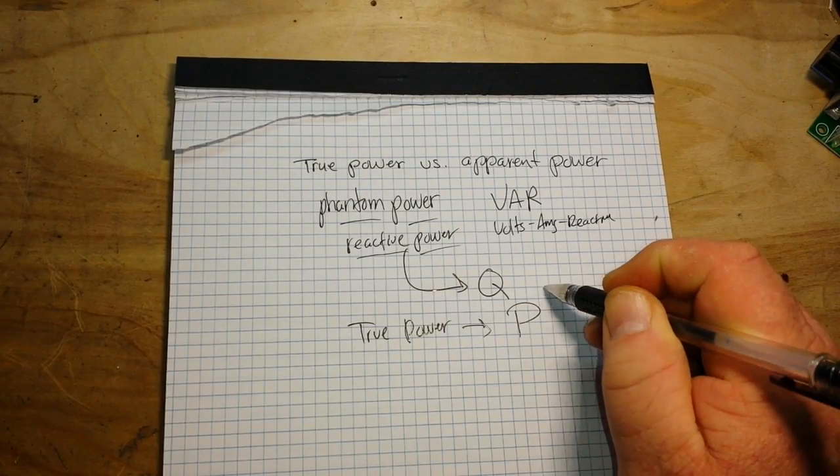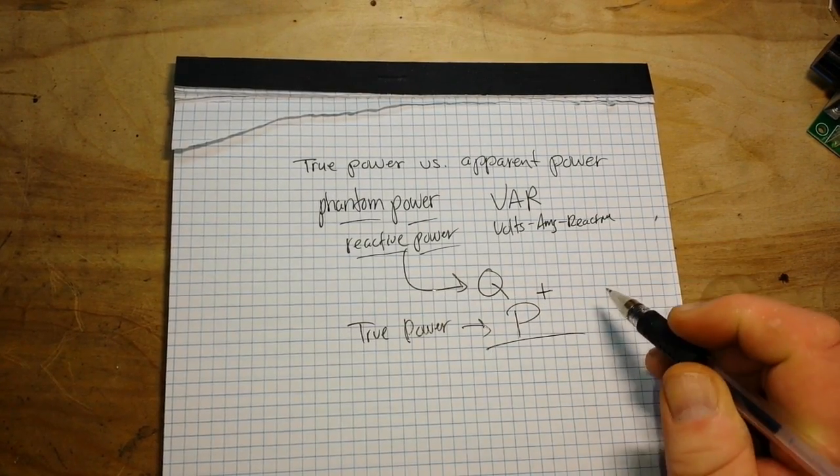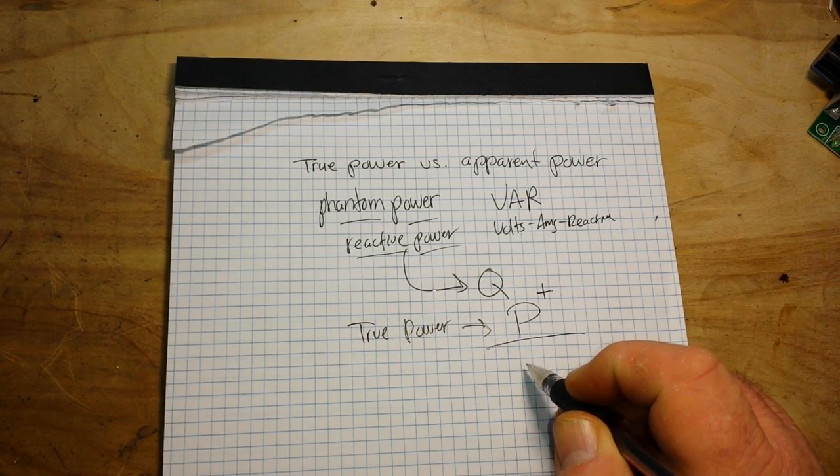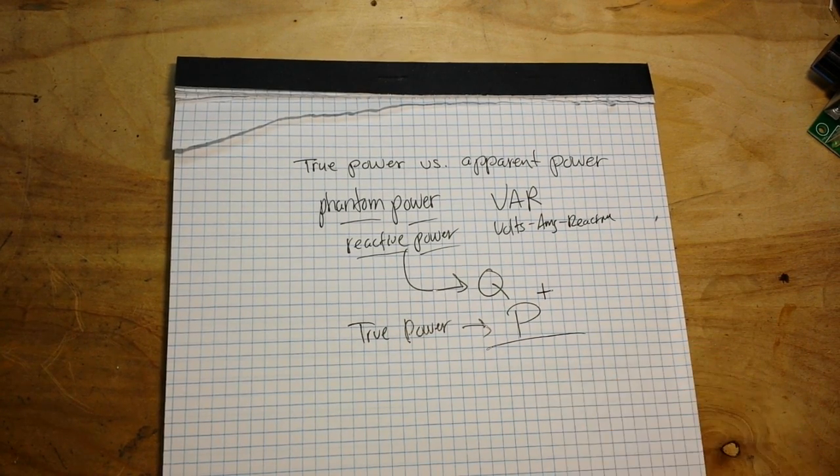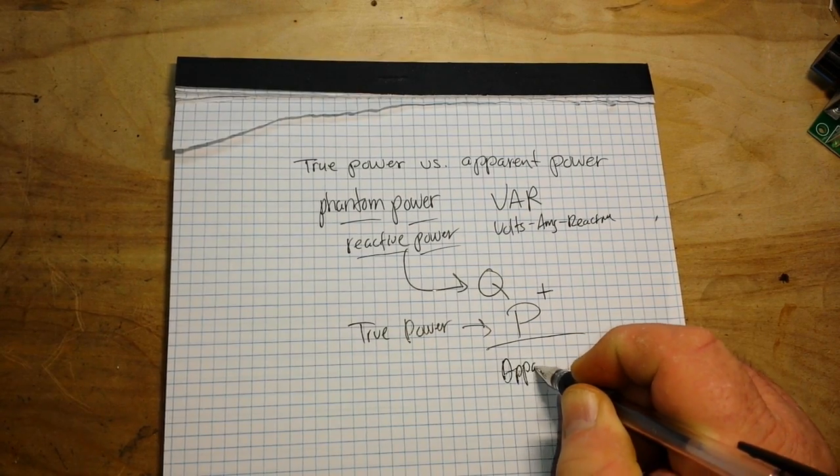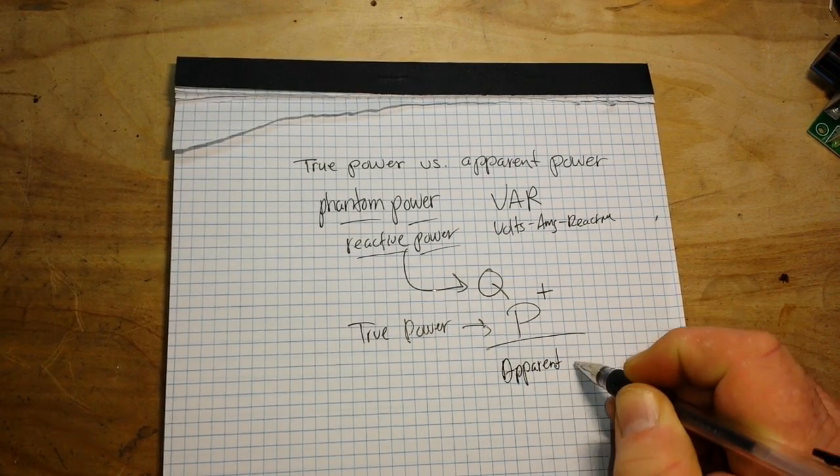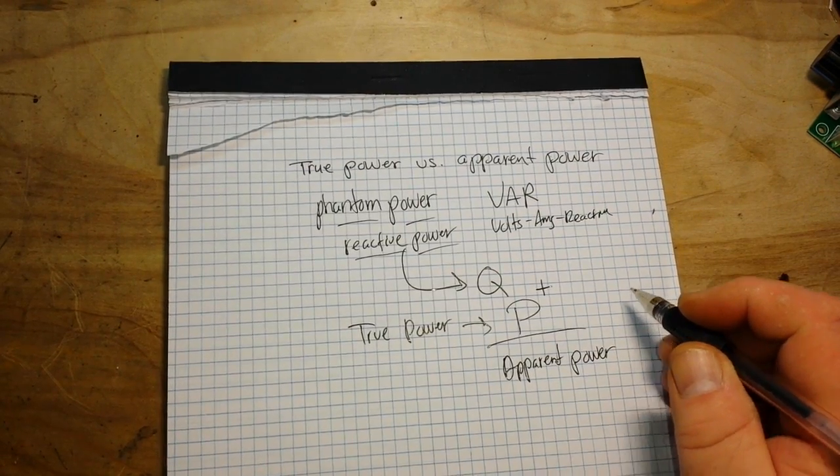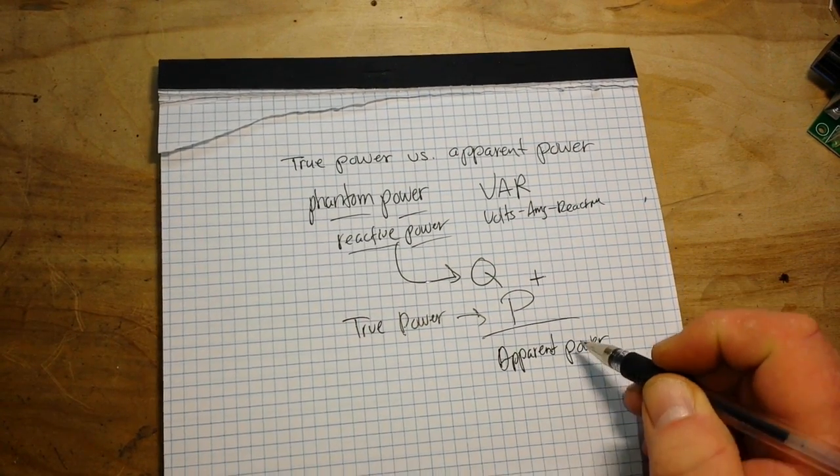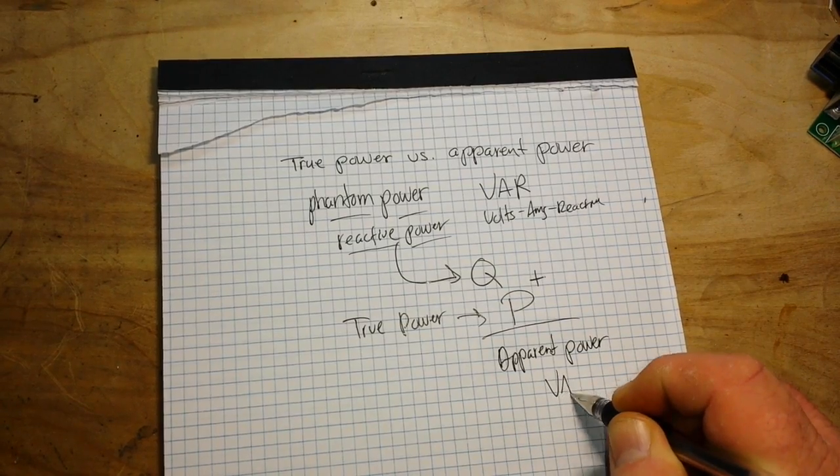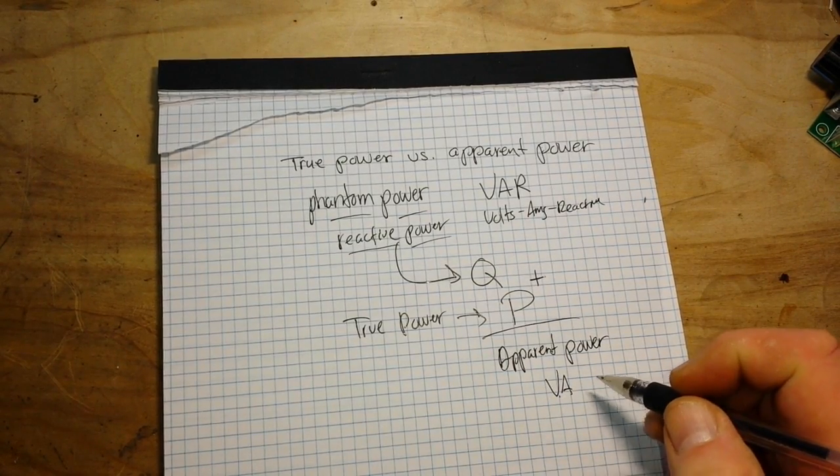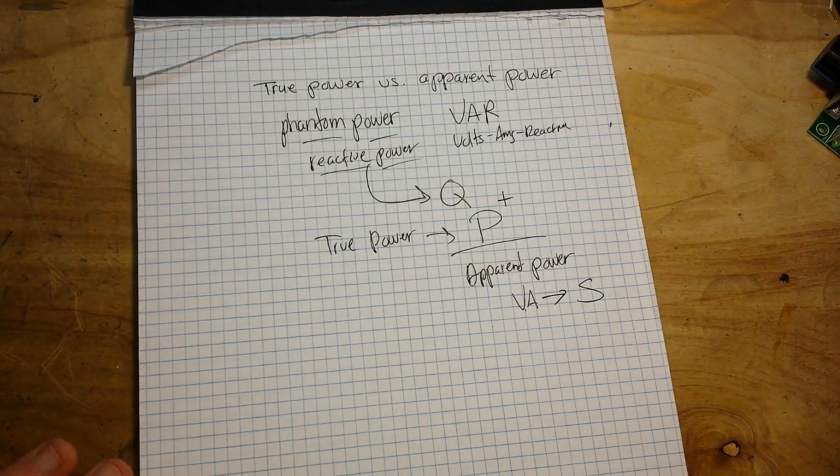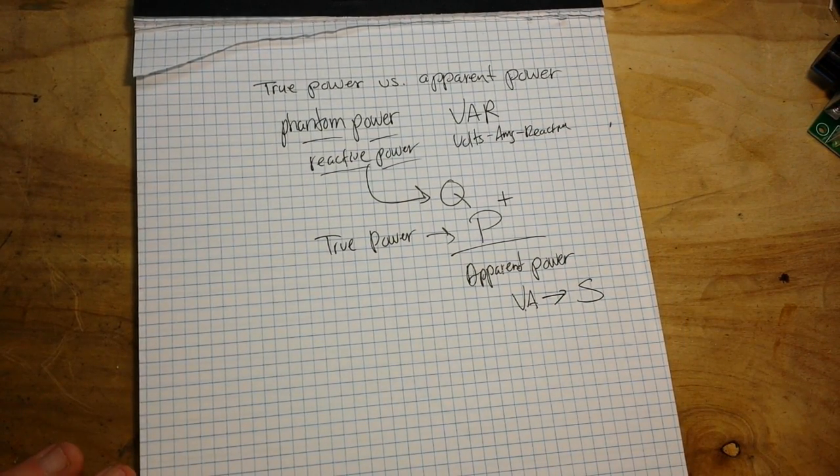Now, when we talk about true power, such as the power dissipated by resistors and lamps and things like that, well, then we're talking about true power, and that is always talked about with the capital P, and that's measured in watts. So when we add Q and P, what we get is what we call apparent power. And the unit for apparent power is VA, volt amps, and it is symbolized by the capital S.